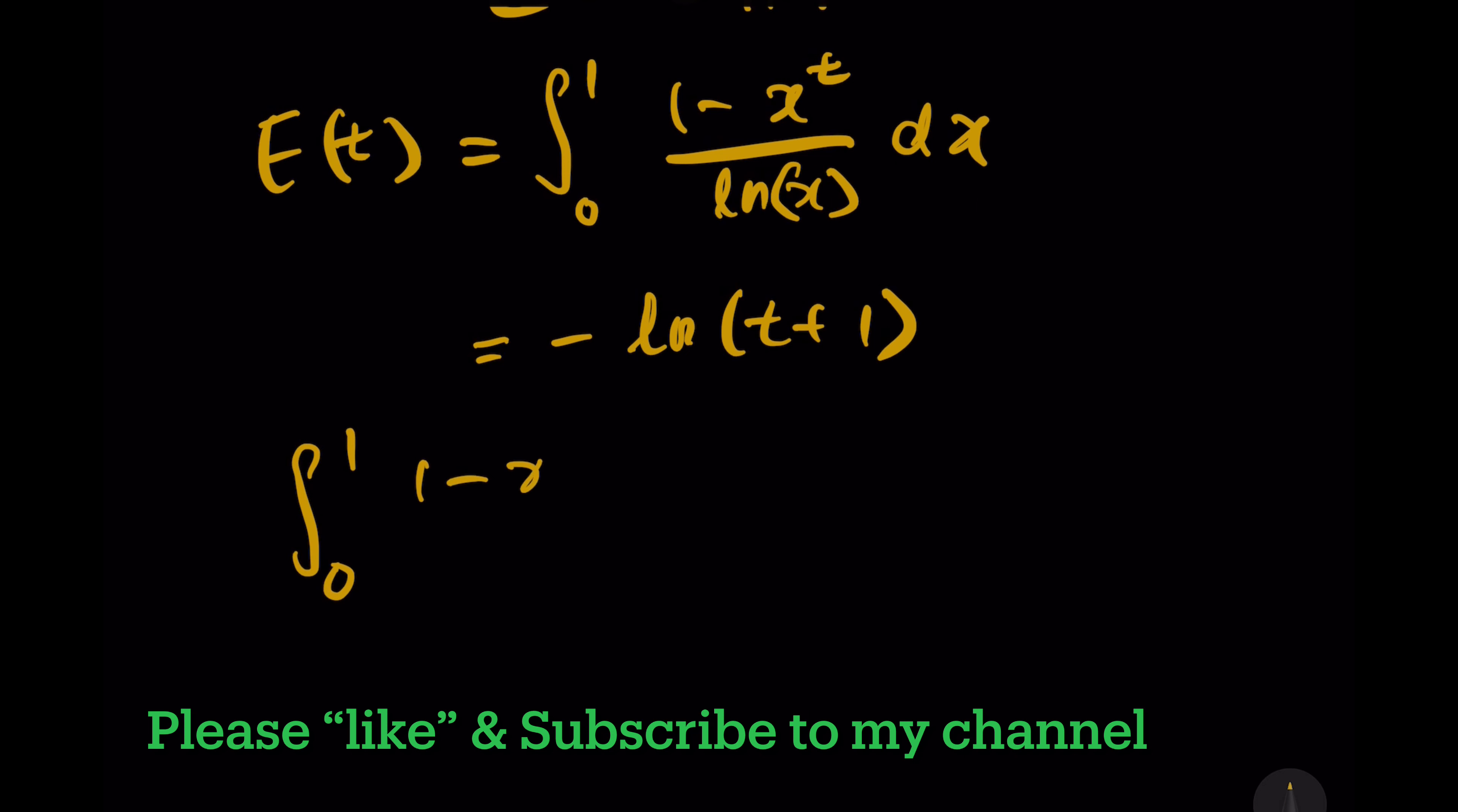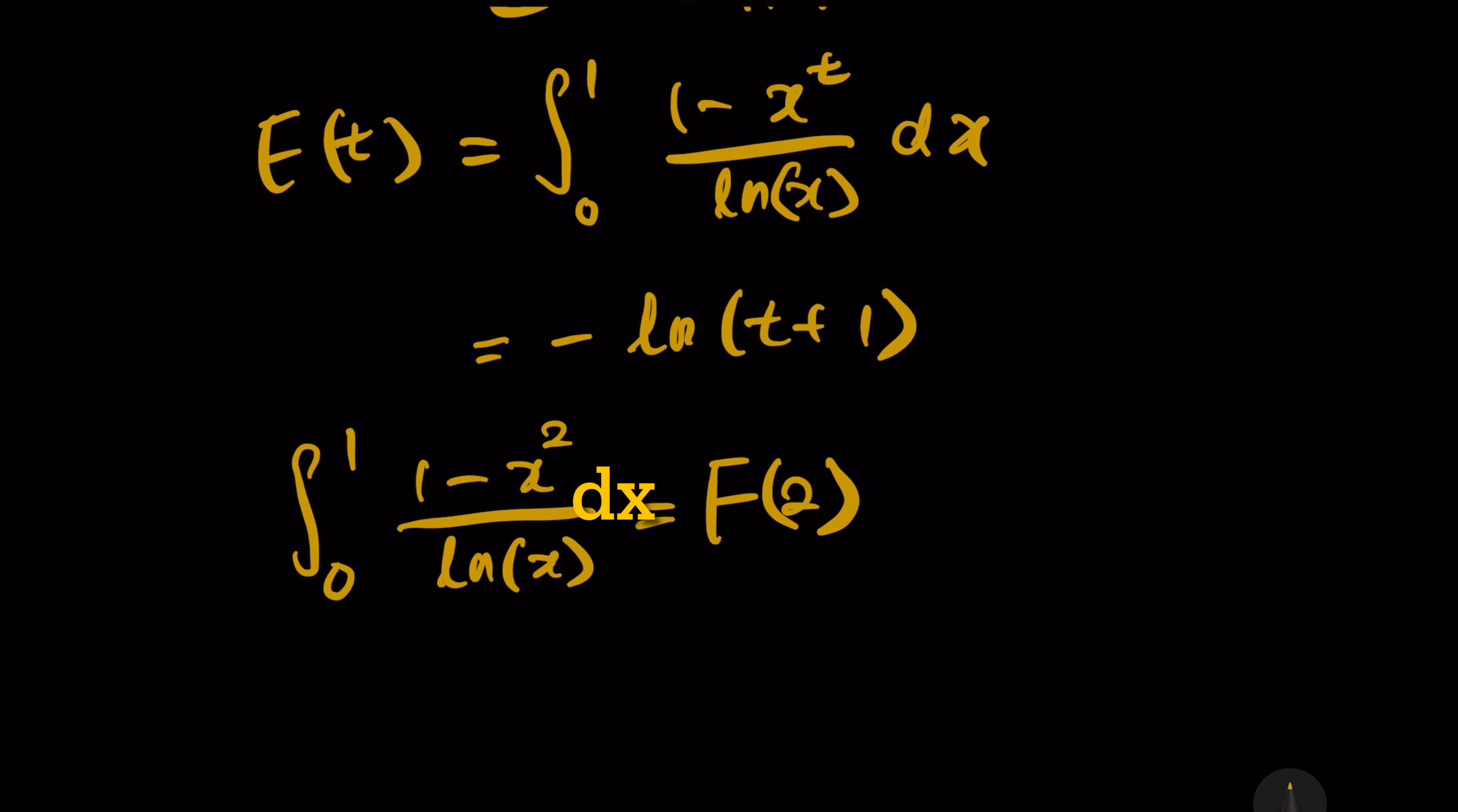In order to find the original integration that we need, which is the integral from 0 to 1 of (1 minus x^2) over ln(x), we need to find F(2). Why? Because here t is supposed to be 2.